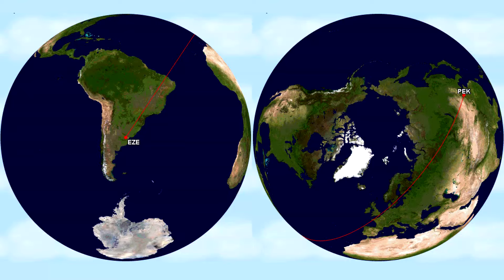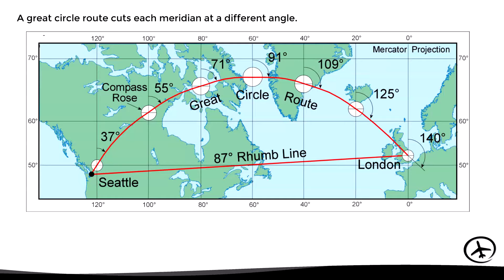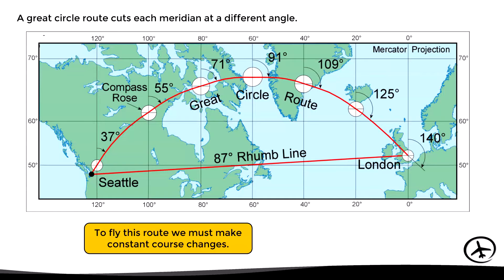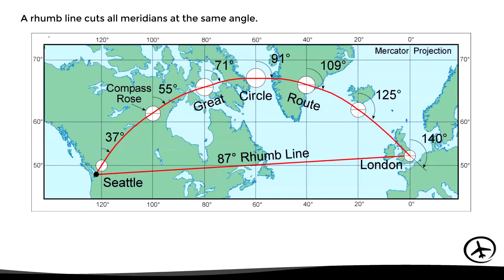So far we have focused on the difference in distance between the two types of route, but what about the course? A great circle route cuts each meridian at a different angle. For example, to follow the great circle route between Seattle and London, we depart from Seattle with a course of 037, and as the flight progresses we must gradually increase our course until reaching London with a course of 140. Since constant course changes are required, this route is more complex and therefore more difficult to follow.